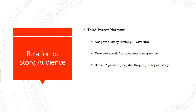Now let's go to the third-person narrator. What is their relationship to the story or audience? The third-person narrator is usually not part of the story — they are external to the story. They usually don't speak from a personal perspective; they're not talking about how 'I feel' or 'what I am doing,' but only what he, she, they, or it are doing. So it uses the third-person to report the story, not the first-person perspective.